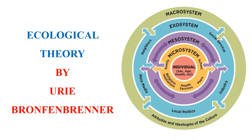Bronfenbrenner states that individual development is influenced by a series of interconnected environmental systems ranging from the immediate surroundings — such as family — to broad social structures like culture. This system includes the microsystem, mesosystem, exosystem, macrosystem, and chronosystem, representing different levels of environmental influence on an individual's growth and behavior.